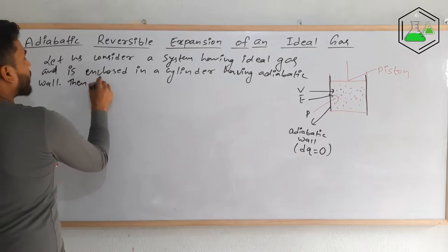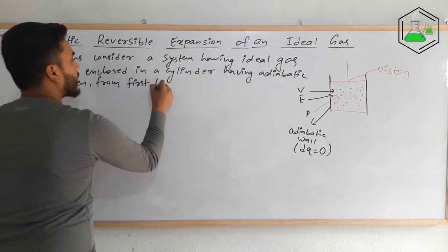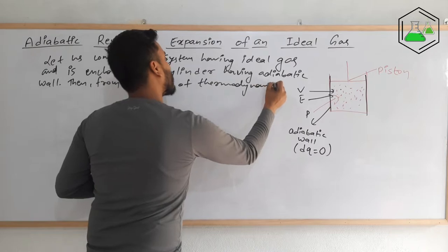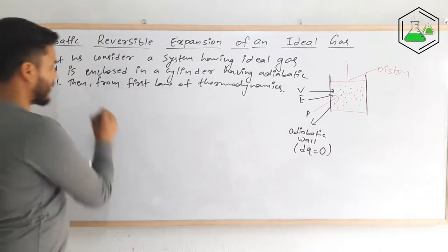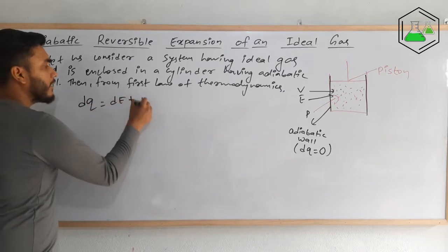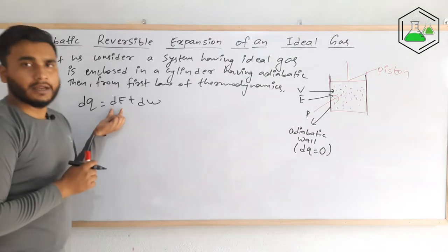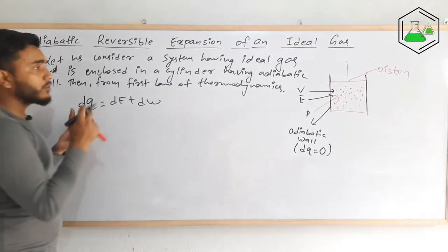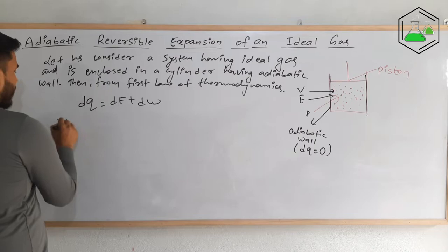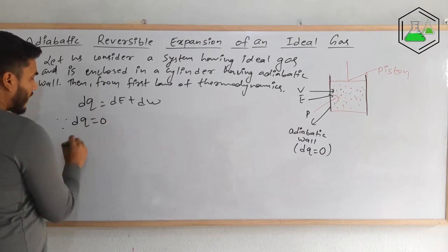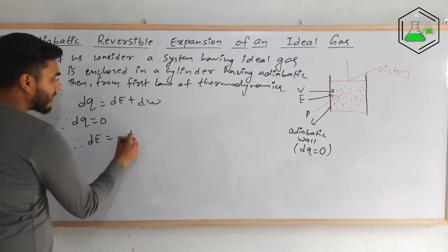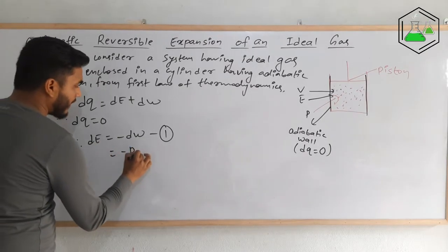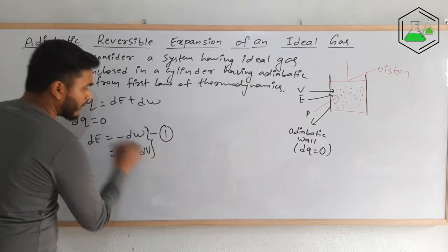From the first law of thermodynamics, we know that dQ = dE + dW, meaning the sum of change in internal energy and work done equals the heat supplied to the system. In this particular case, since dQ = 0, we can write dE = −dW. In place of dW we can write −p dV, so dE = −p dV. This is equation number one.